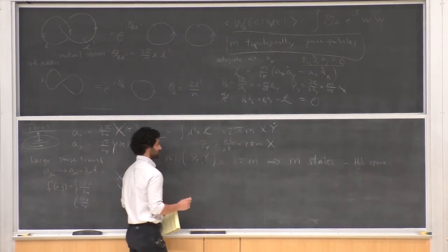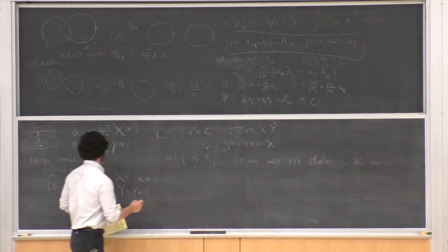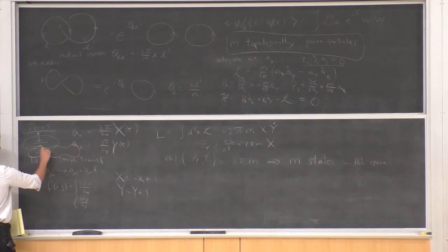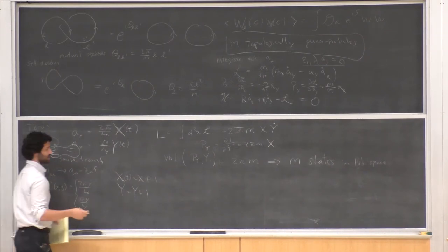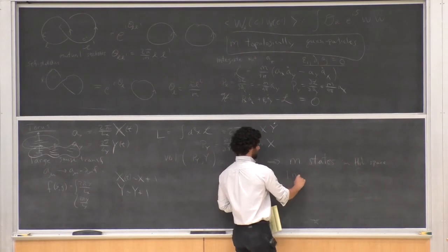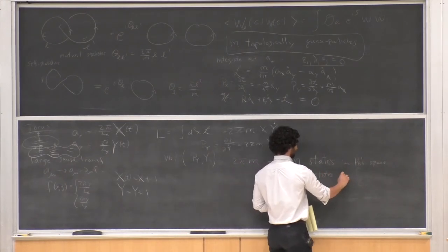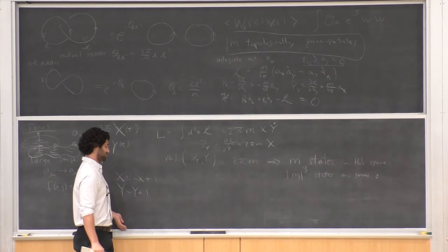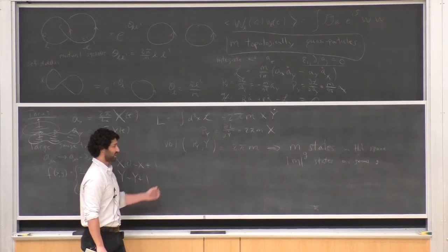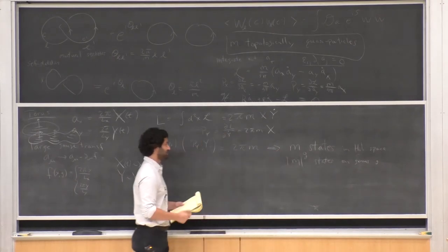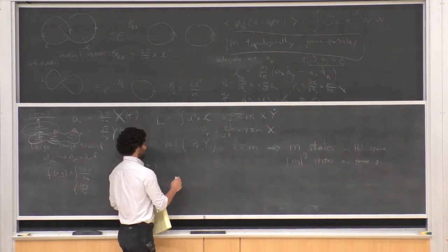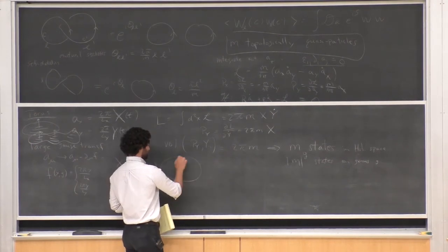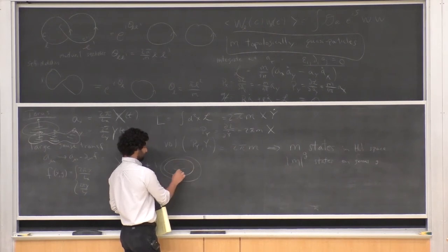If you do this on a genus G surface, a similar calculation tells you there are M^G states in general. Going back to the Wilson loop operators: on a torus, I can have a Wilson loop going around cycle α or cycle β. I define W(α) = exp(i ∮_α a) and W(β) = exp(i ∮_β a).